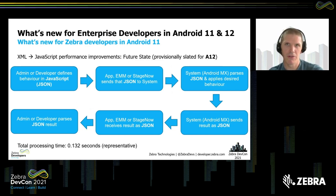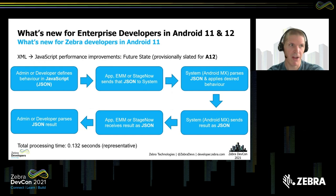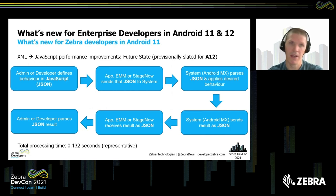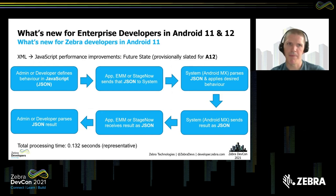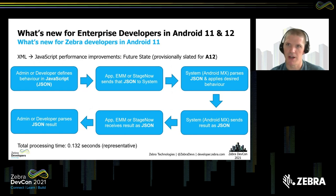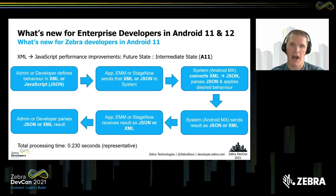So if you're doing configuration — maybe your application is momentarily enabling the camera on your device as part of a workflow — we've just improved that workflow performance by a factor of 10. This is the future state where we're working entirely within JSON. This isn't an announcement of deprecation. We're fully committed to supporting backward compatibility, so applications can still define XML.